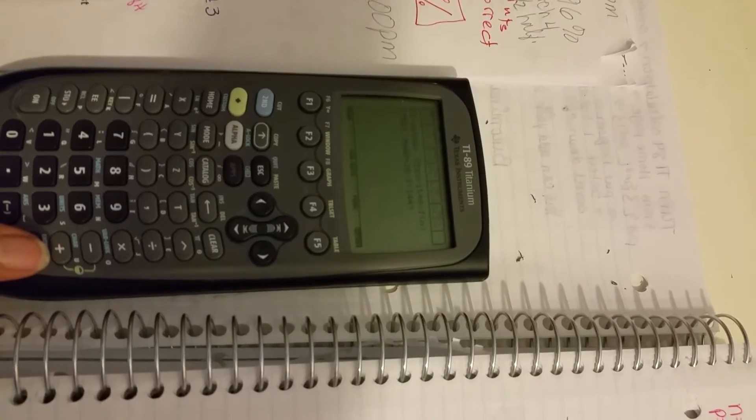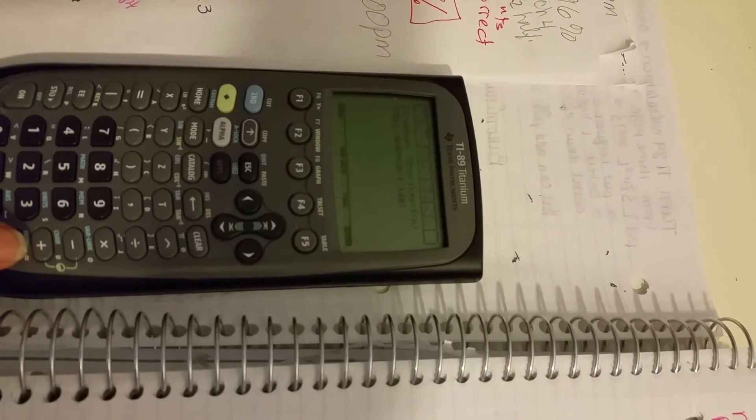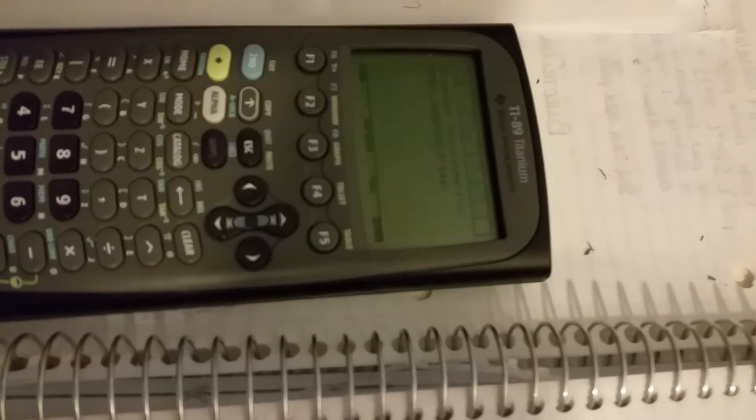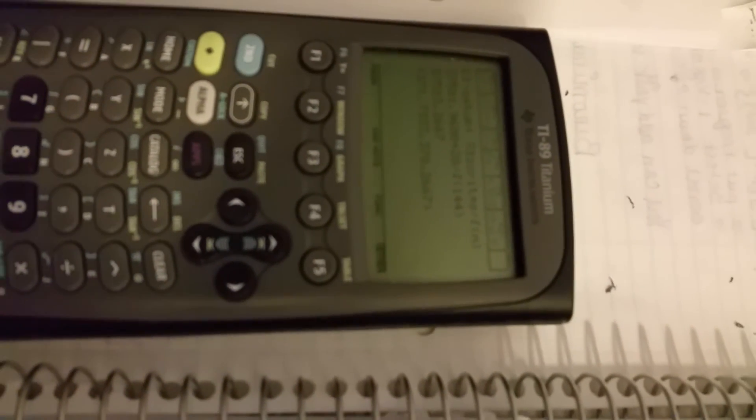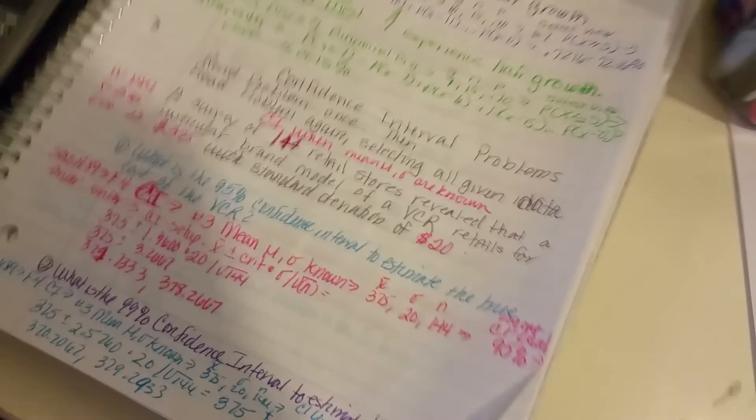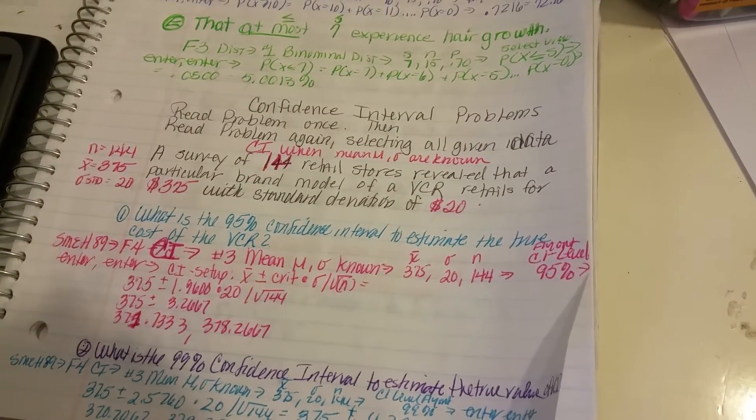And you see, it gives you the formula. Then it starts putting the numbers into the formula. You enter it again. It computed all the formula. And then it gives you the answer. The answer is $371.73 to $378.26. You look on your test and you look for those numbers.